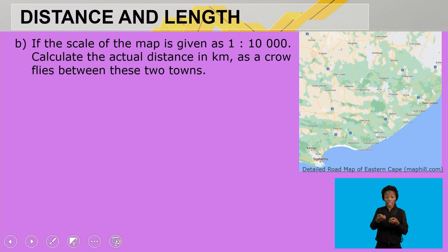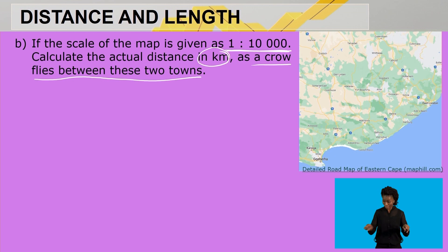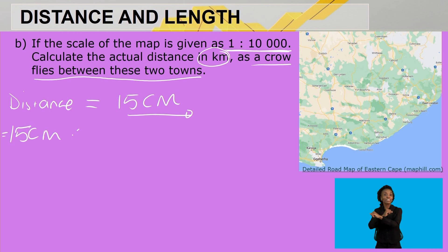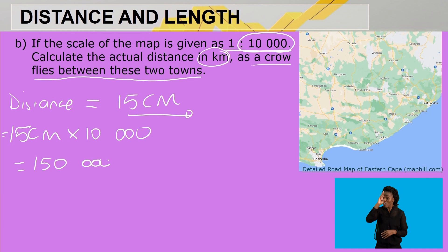For Part B, the scale of the map is given as 1:10,000 — a number or ratio scale. Calculate the actual distance in kilometers as the crow flies between the two towns. We have already calculated the distance between these two towns as 15 centimeters. Now we take our measured distance of 15 centimeters and multiply it by the scale of 10,000, which gives us 150,000 centimeters.